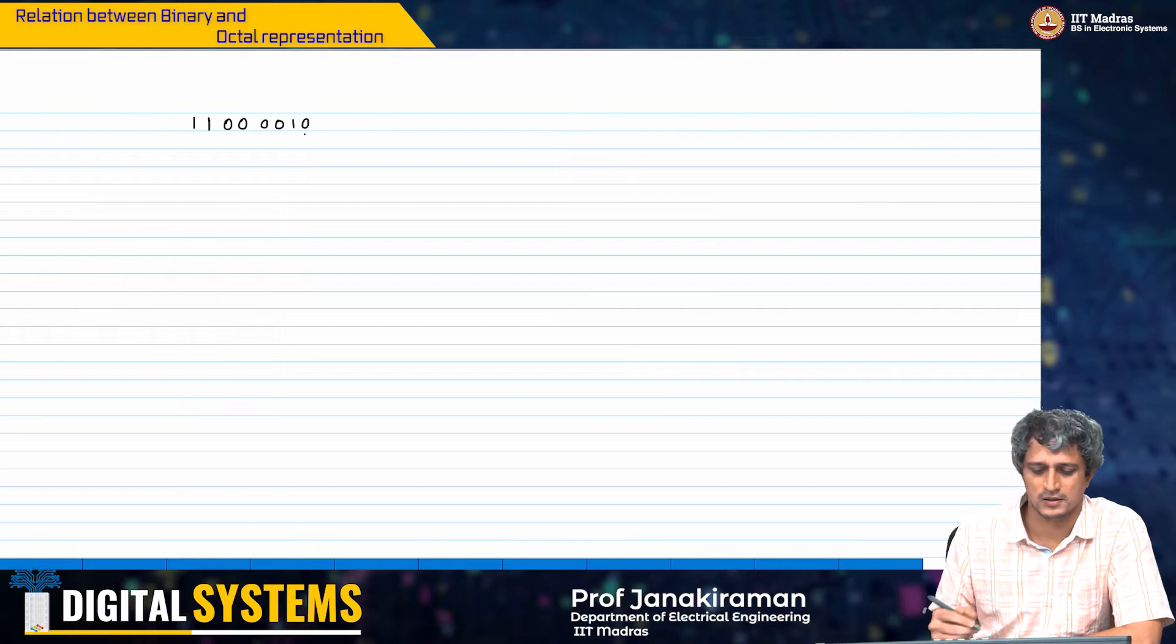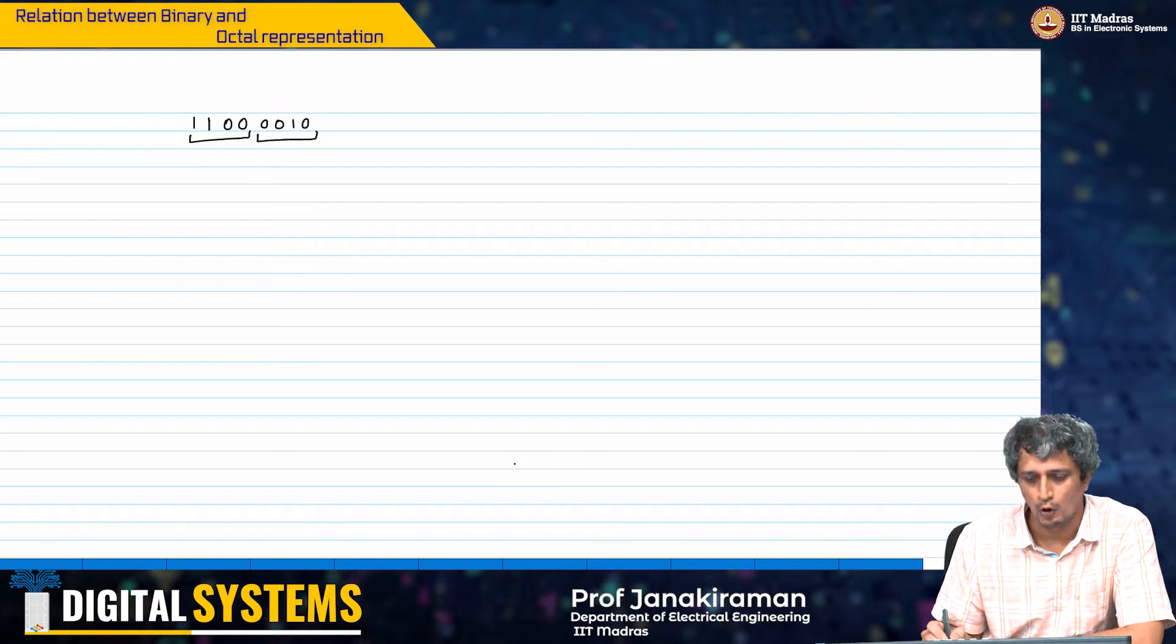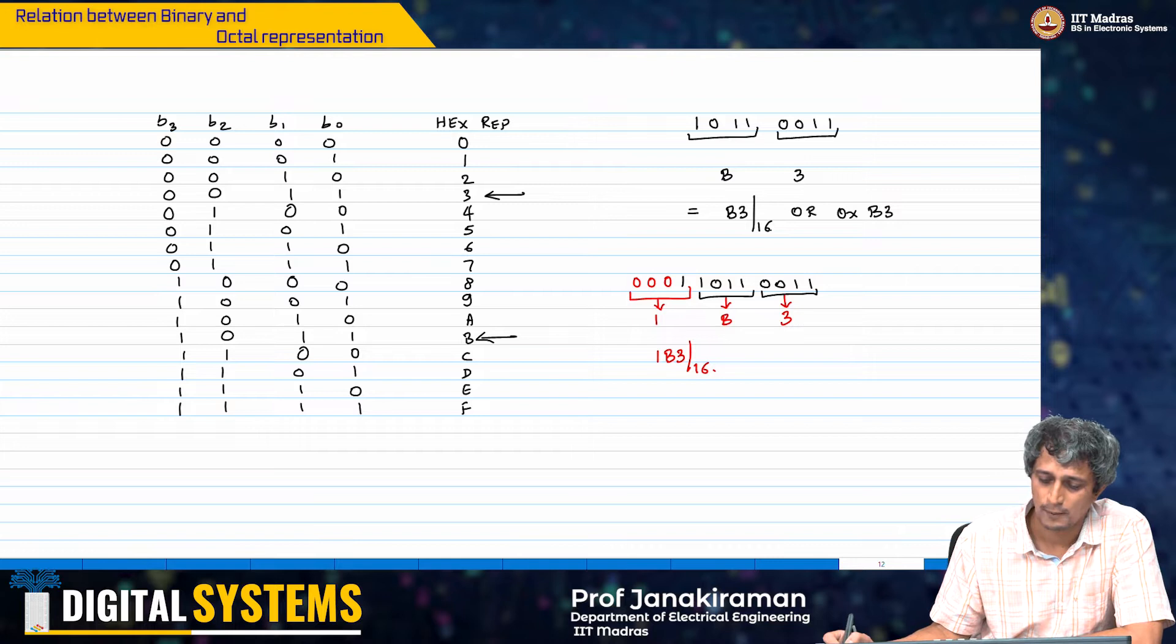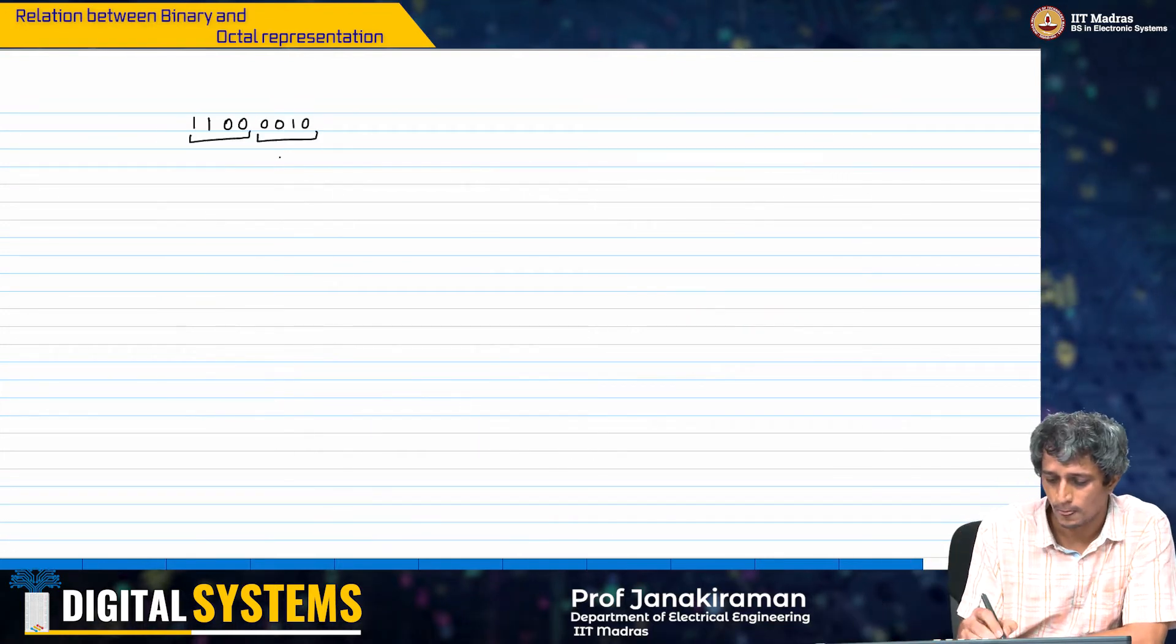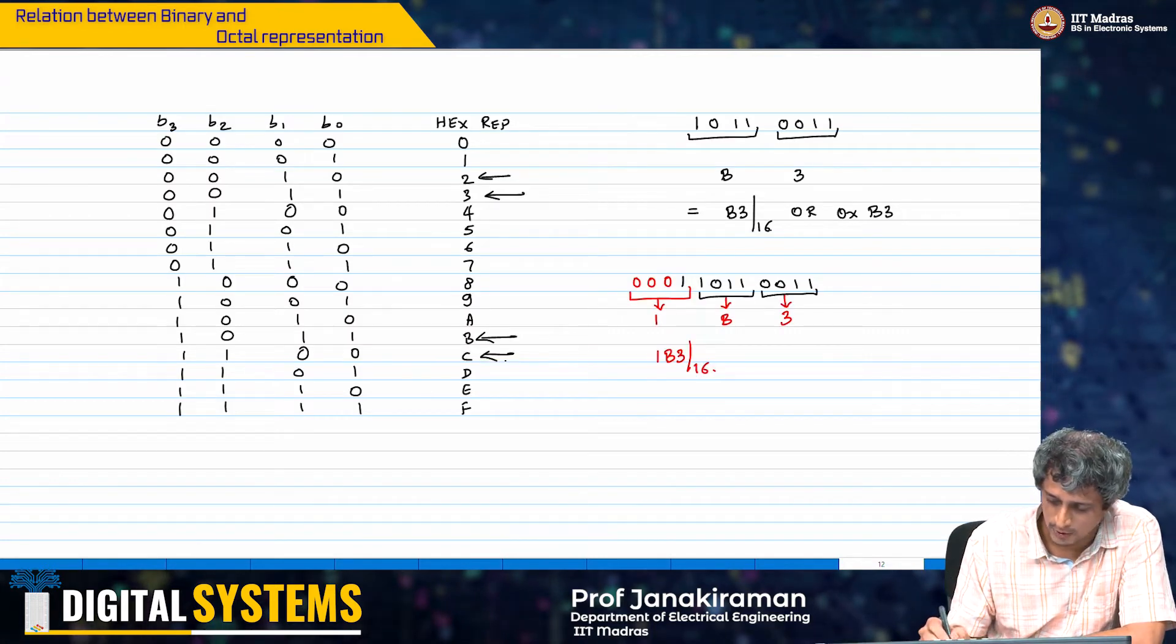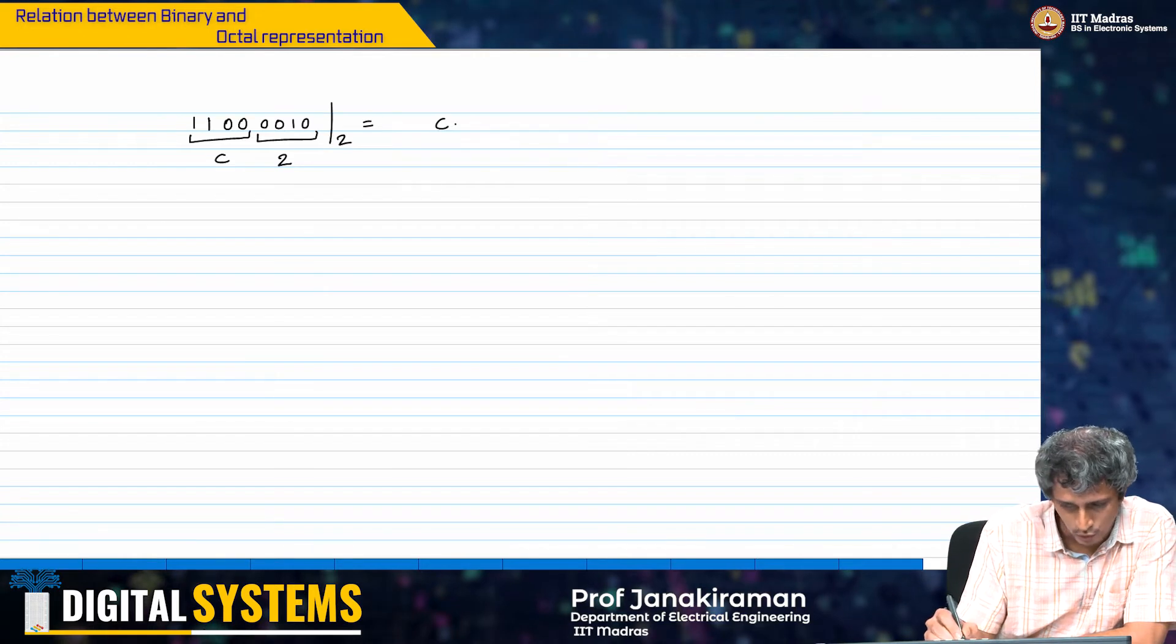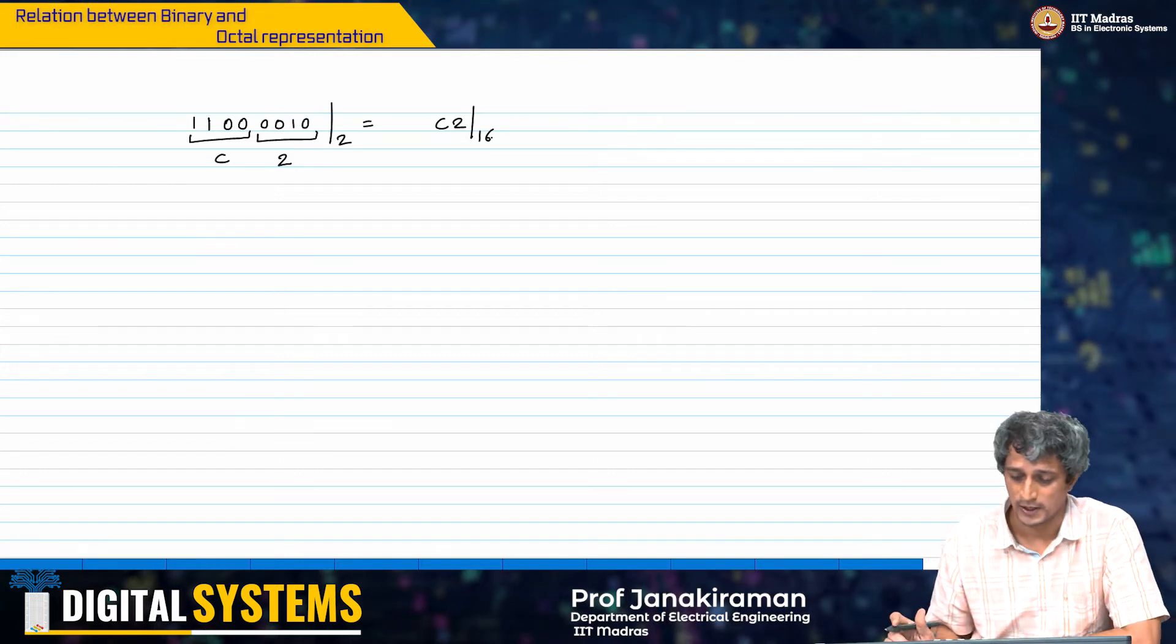How do you first of all convert this to a hexadecimal number? Here, you take in groups of 4. 0010, 0010 happens to be here, which is 2 and then 1100, 1100 happens to be here, which is C. Therefore, this in binary is equal to C2 in base 16. We do not even know what it is in decimal unless we evaluate it.